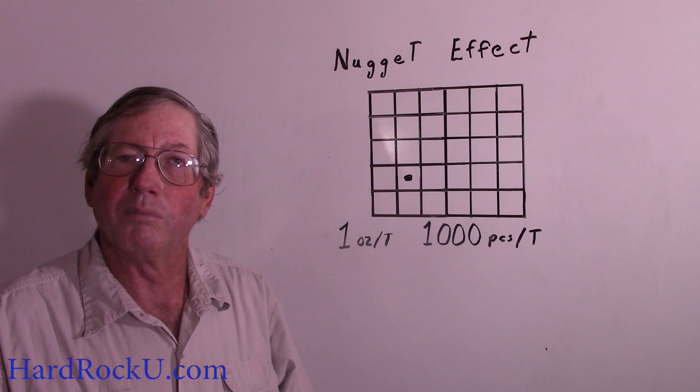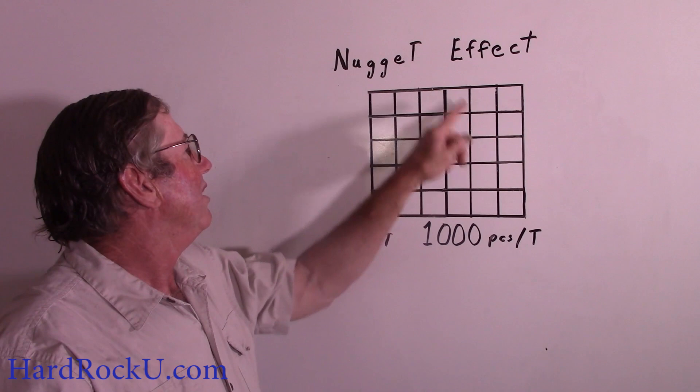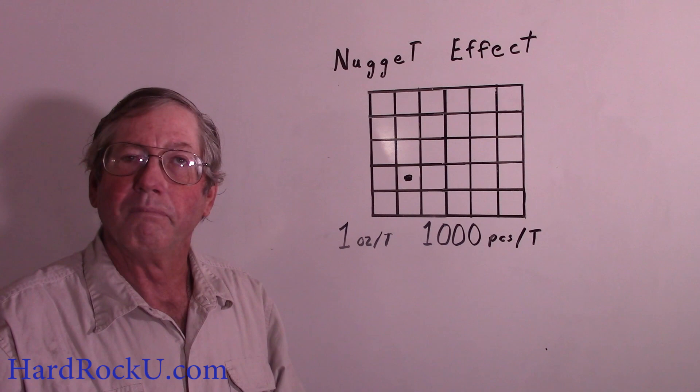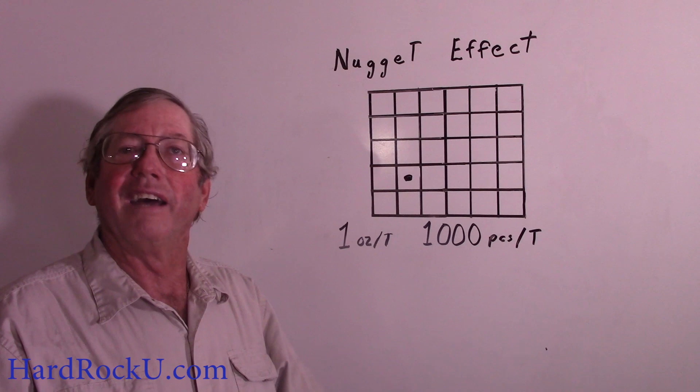If you had a ton of rock and divided it into 30-gram samples, you'd wind up with about 30,000 samples. So if you have 1,000 particles of gold and 30,000 samples, this is what you wind up with: 29 samples will read zero, one will read 30 ounces per ton. And that's perfect — if you do your job perfectly, if the laboratory does their job perfectly, that's what you're going to get. That will suck, because 29 times out of 30 you're going to think you got nothing, when actually you've got one ounce per ton, which is pretty good.